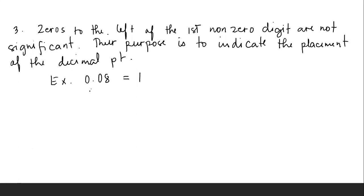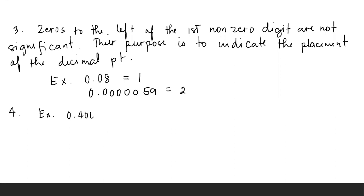Guideline number four: if a number is less than one, then only the zeros at the end of the number and the zeros between non-zero digits are significant. For example, 0.0000059 has only two significant figures — 5 and 9. Another example, 0.40 has two significant figures — 4 and 0. And 0.00005001 has four significant figures: 5, 0, 0, 1.